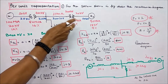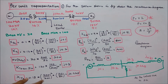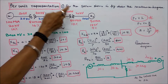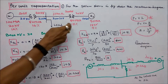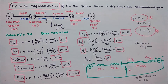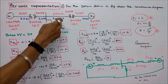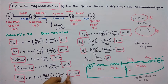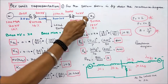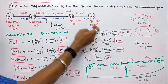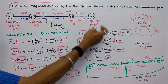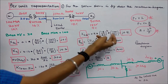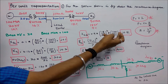Fourth is the transformer on the high-voltage side (200 kV). The given reactance is 0.18, multiplied by (200/200)² × (100/80), which equals j0.225. Fifth is the generator. The given reactance is 0.09, multiplied by (18/20)² × (100/90), which equals j0.81.